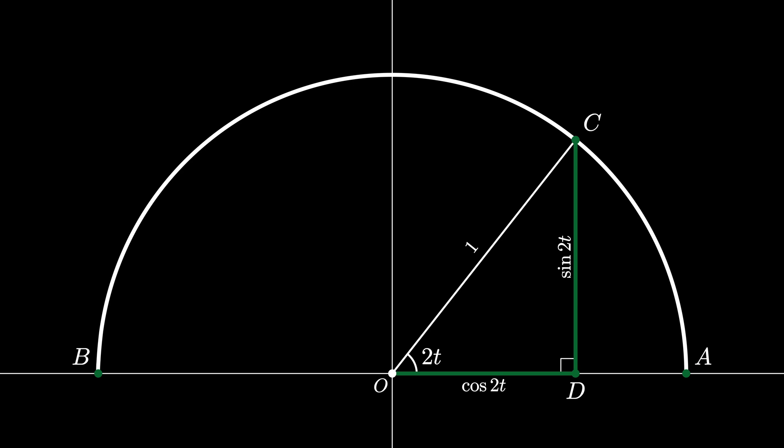Now we draw another triangle connecting the points A, C, and B. By Thales triangle theorem, this is a right angled triangle and the right angle occurs at point C.